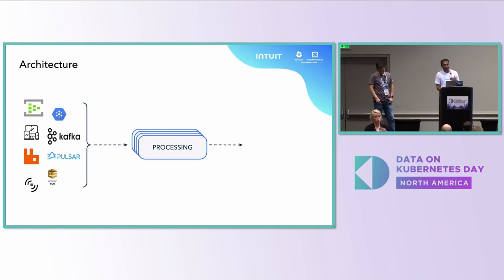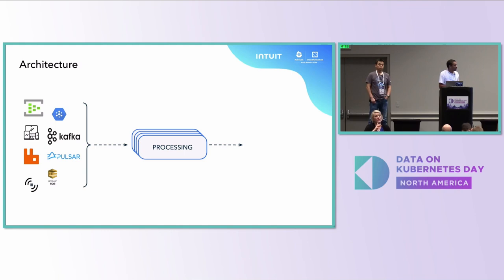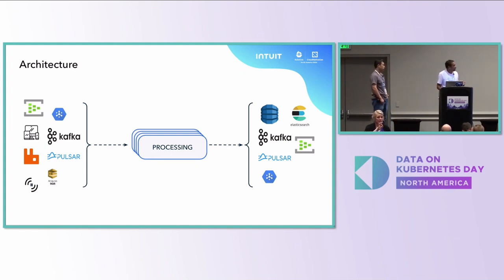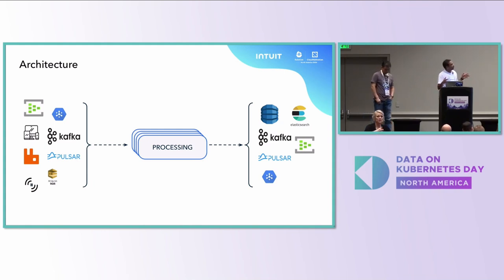This processing could be as complex or as simple as it needs to be — multi-step processing. For example, you could be doing simple transformations or very complex machine learning algorithms. Then you send it to a destination like Elasticsearch, some RDBMS, or back to Kafka for somebody else to consume. This unit — source, multi-step processing, and sink — is what we call stream processing.